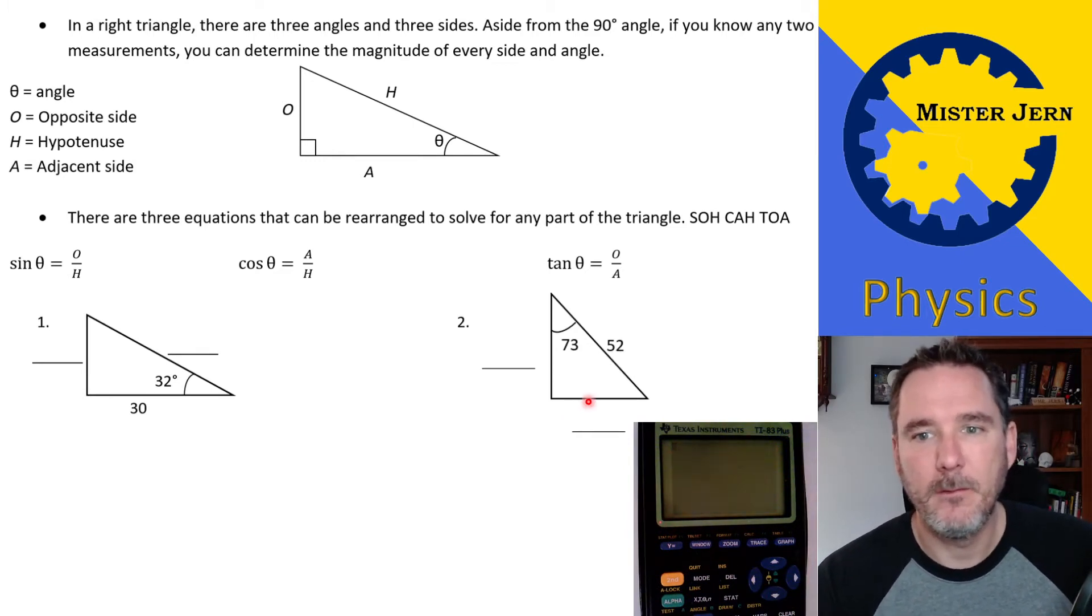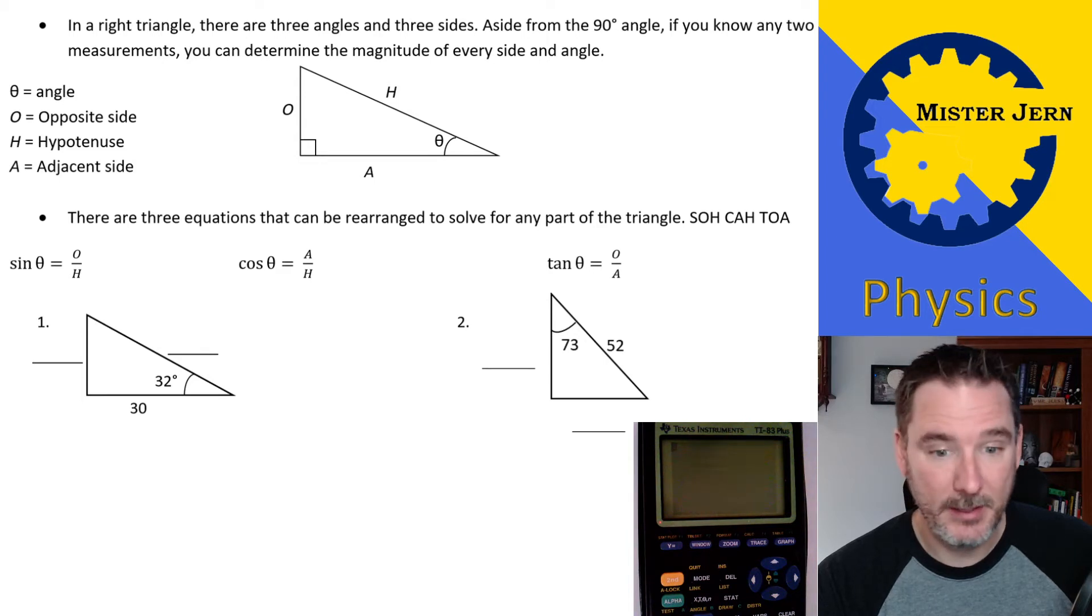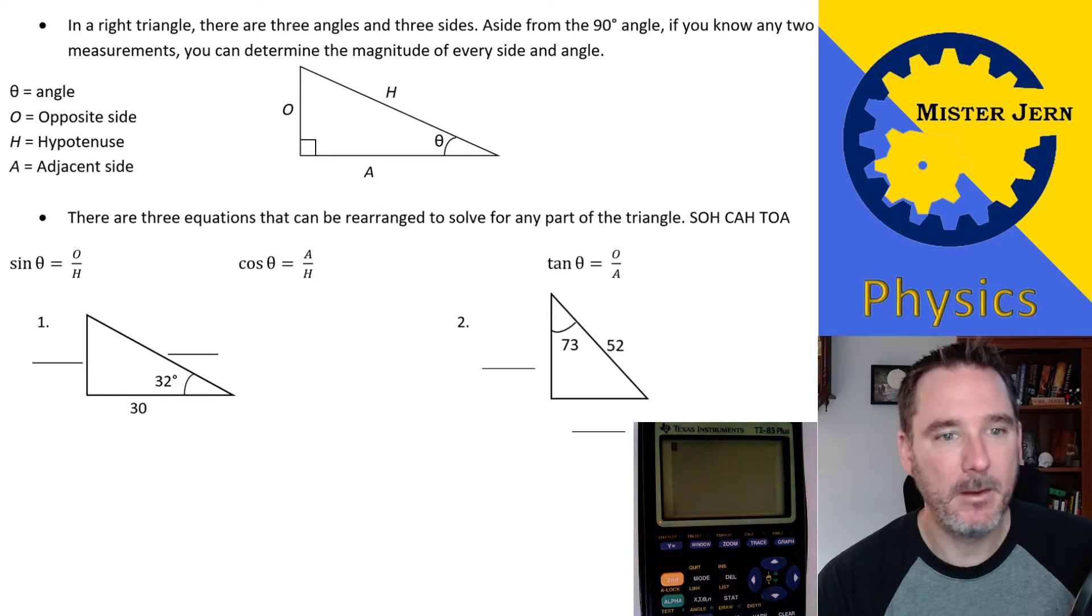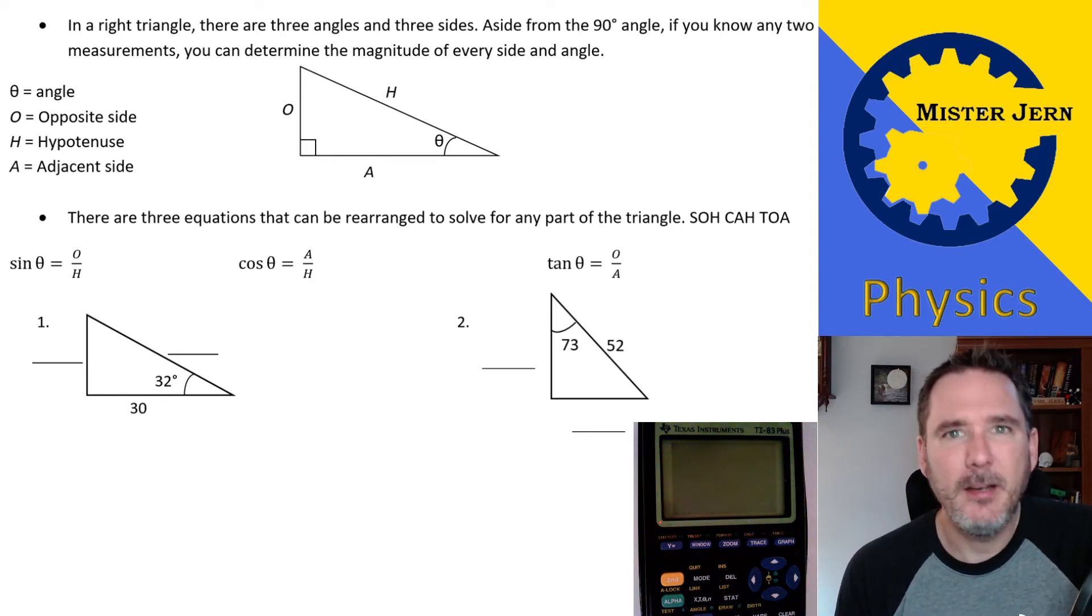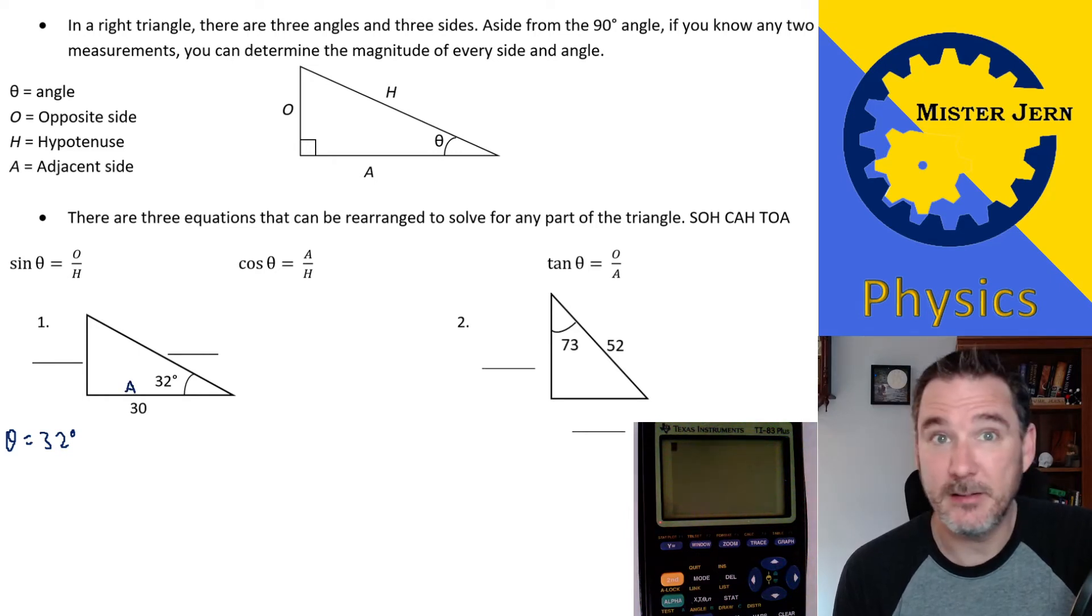What I'm going to do is show you some examples of how to use this. We've got a couple triangles here, and they're right triangles, so we can use this. We've got our first triangle, and our theta, our angle, is 32. So I'm going to mark down that theta is 32 degrees. And then before I go any further, I'm going to mark down this is my adjacent, because it's right next to the 32. This is my hypotenuse, the longest side, and this is my opposite side. I'm going to put a little p there just to remind me that it's not a zero.